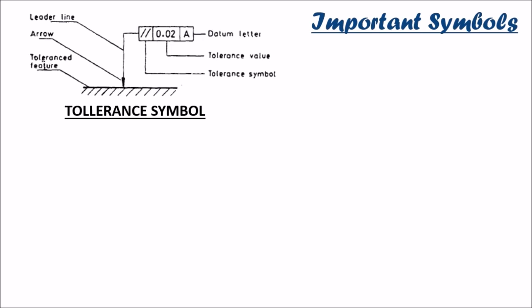Coming up to the important symbols which are branch independent and frequently used in engineering drawing. Those are tolerance symbols. The tolerance symbol is a double parallel line with three blocks. The first block showing the tolerance symbol, the second block showing the tolerance value and the third one the datum letter. Tolerance is the upper limit value of the load which design element can resist.